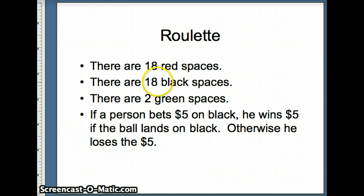There are 18 black spaces out of 38 total. 18 plus 2, 20 losing spaces out of 38 total. We can use that information to construct our random variable. We win $5 18 times out of 38. We lose $5 20 times out of 38. We're going to use that to find our expected value, and we will do that on Excel.